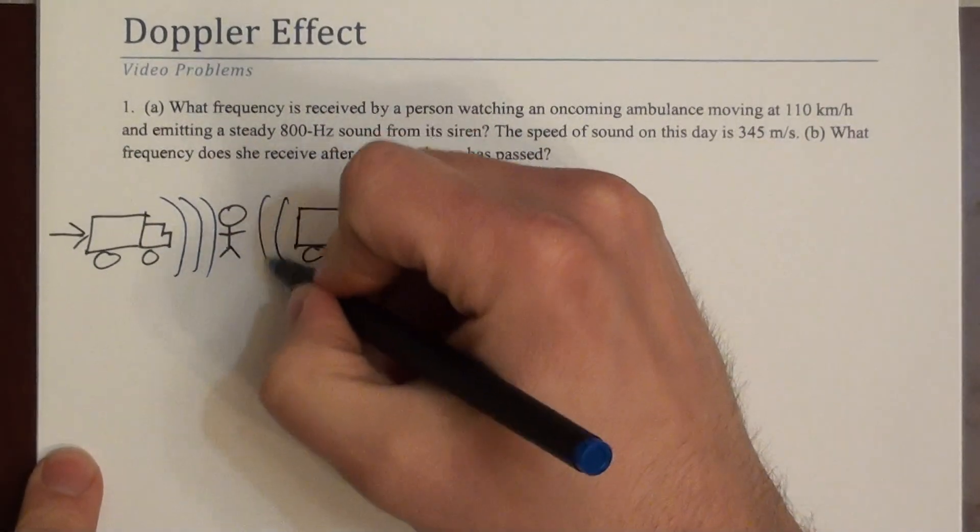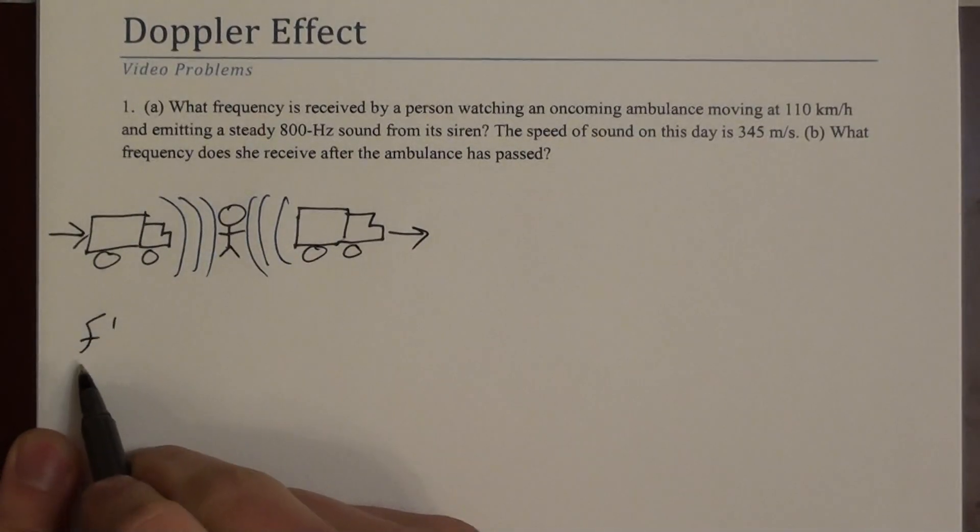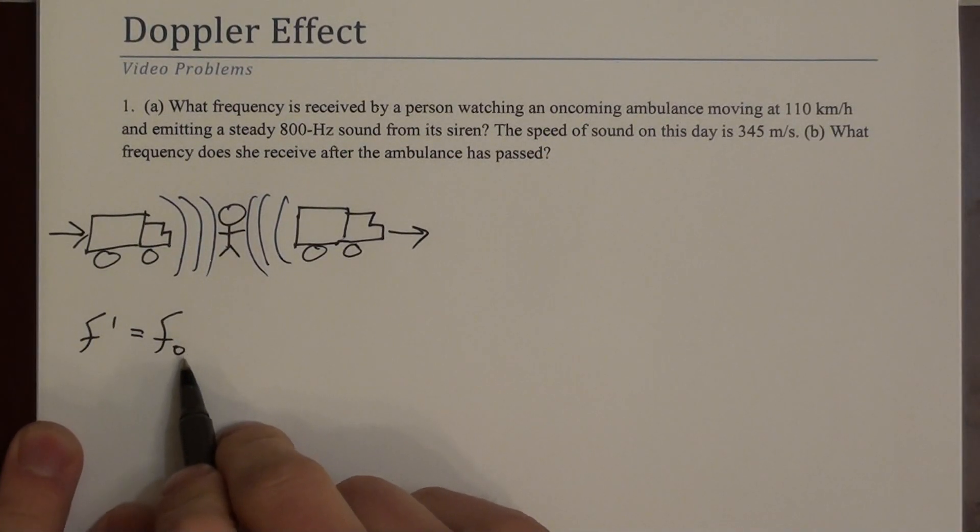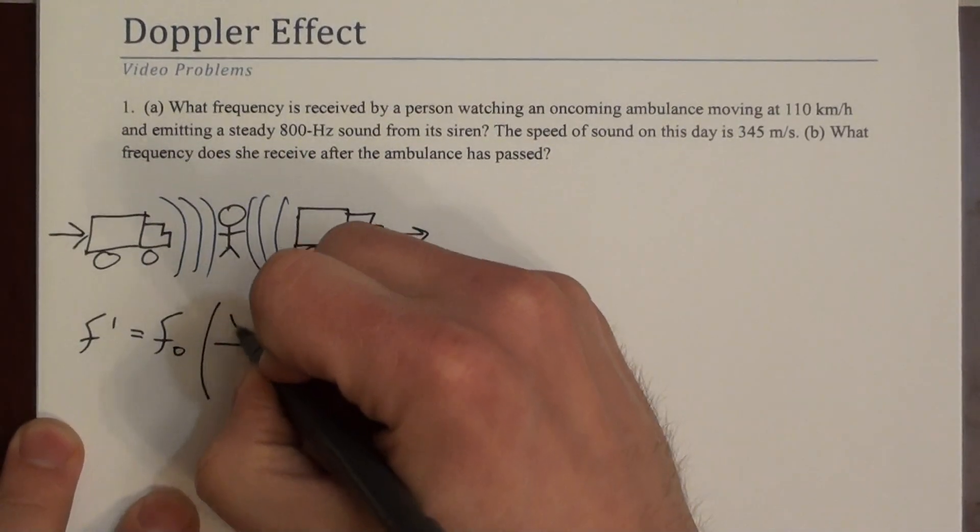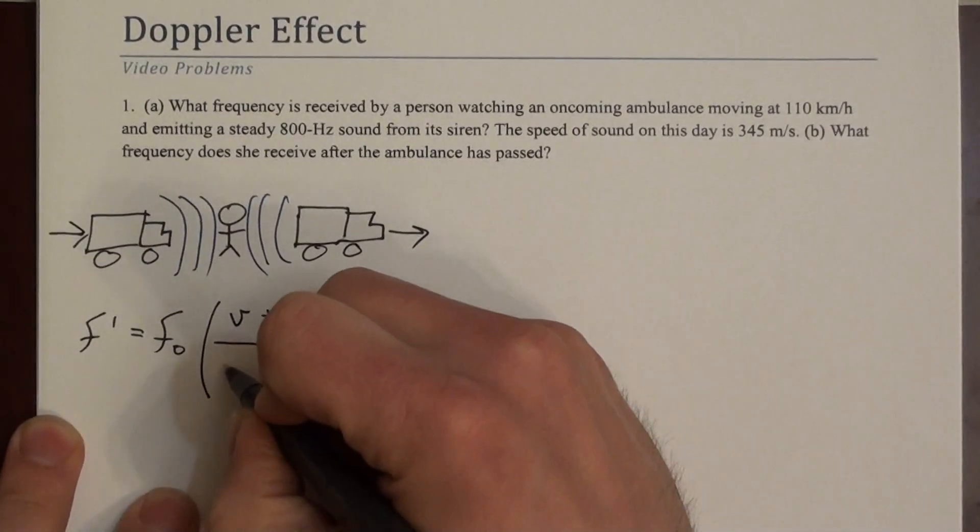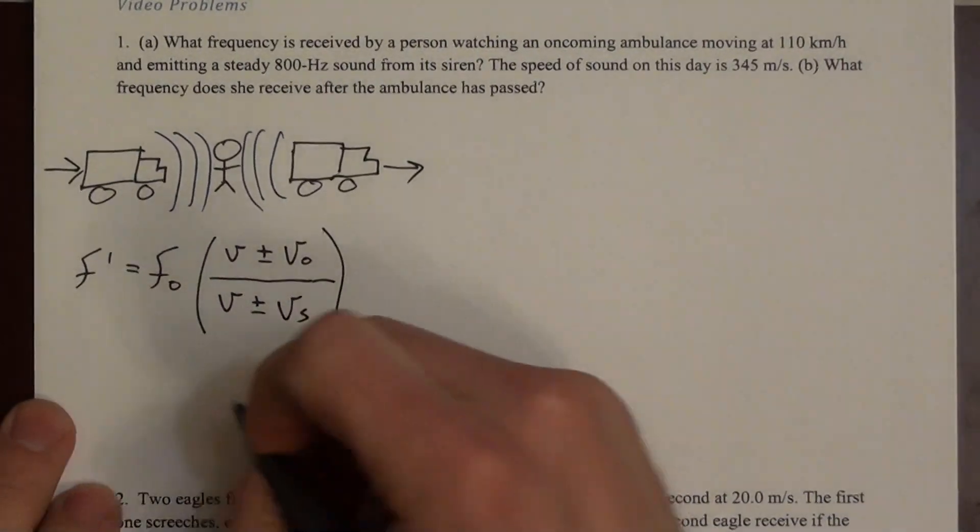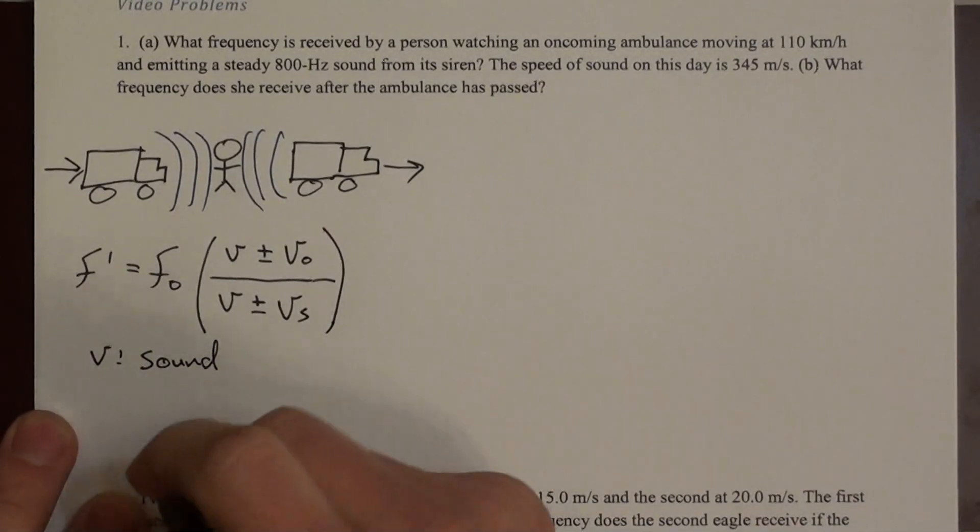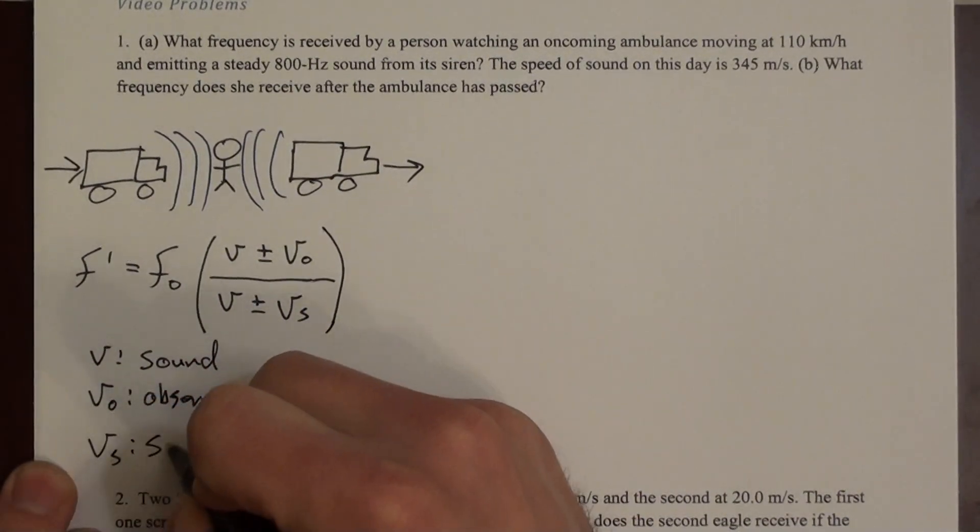The equation that describes Doppler's shift says that the observed frequency, f prime, is equal to the emitted frequency, the frequency emitted by the source, times this ratio, this fraction. So it's v plus or minus v_o divided by v plus or minus v_s. So let's identify those things. The unscripted v is the speed of sound. v_o is the observer's velocity, and v_s is the source velocity.